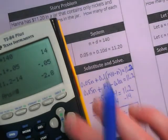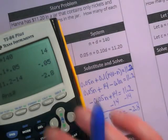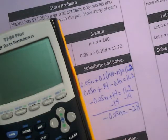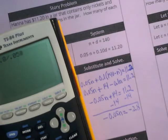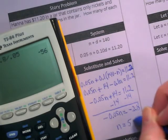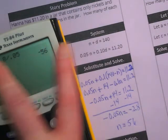So negative 2.8 divided by... oops, sorry, hit the divided by. Now I'm going to have to enter it all again. Negative 2.8 divided by 0.05. I didn't put both negatives in. I get 56. Now we know how many nickels there are.